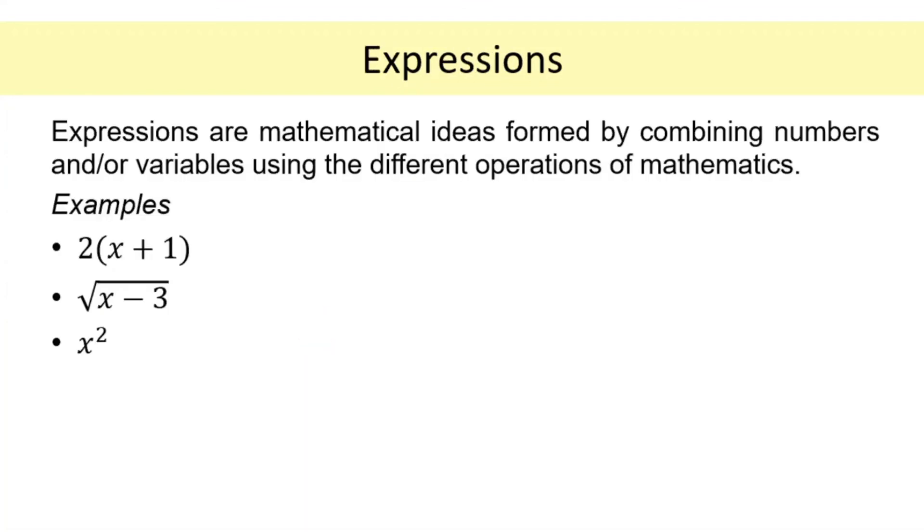Another mathematical object, we call them expressions. They are formed by combining numbers and/or variables using the different operations of mathematics. Here are some examples of an expression. We have a variable x. If we add 1, the result would be x + 1 and then we multiply 2. So it is just expressing that we have an unknown number. We add 1. After that, we multiply the result by 2.